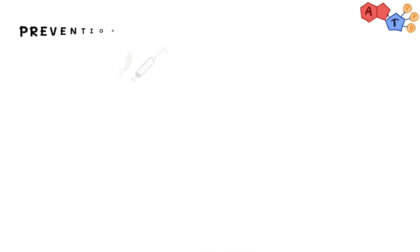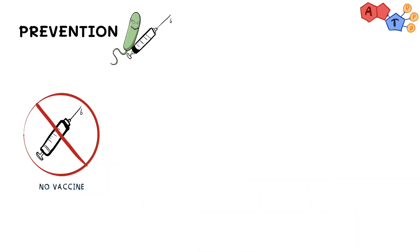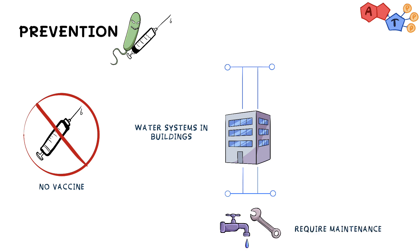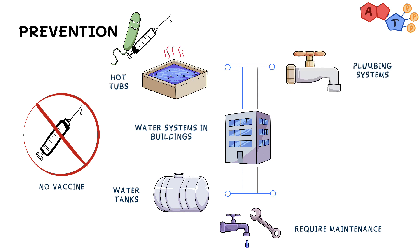As for Legionella prevention, currently we don't have a vaccine for it. However, we can still reduce its transmission by ensuring that water systems in buildings are well maintained. This includes hot tubs, water tanks and heaters, plumbing systems, and fountains.